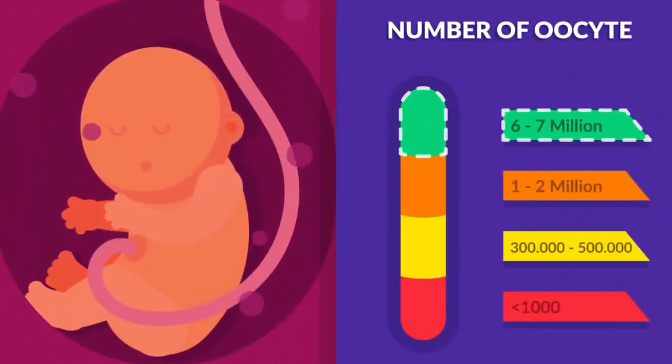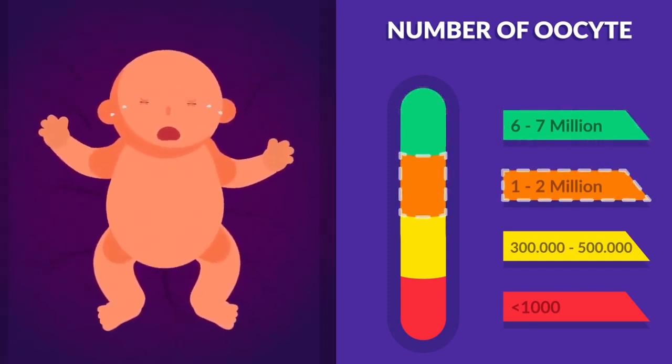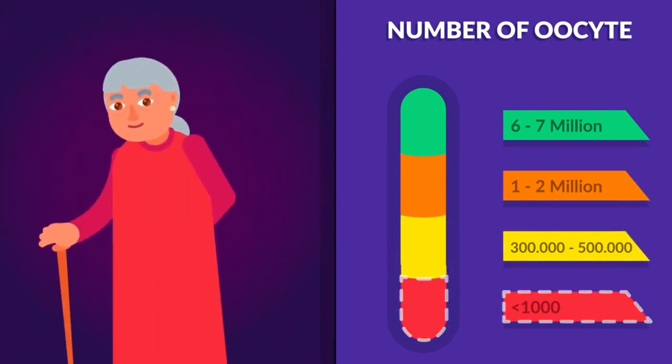It is thought that an overwhelming number of around 6 to 7 million potential cells are already present in a 20-week gestation fetus and then decline to 1 to 2 million at birth. This number continues to decline from 300,000 to 500,000 at puberty to less than 1,000 at an average age of menopause.